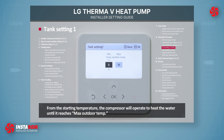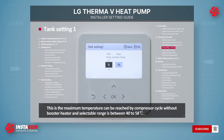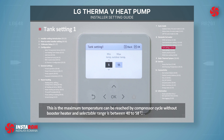From the starting temperature, the compressor will operate to heat the water until it reaches the maximum outdoor temperature. This is the maximum temperature that can be reached by the compressor cycle without the booster heater, and the selectable range is 40 to 58 degrees Celsius.